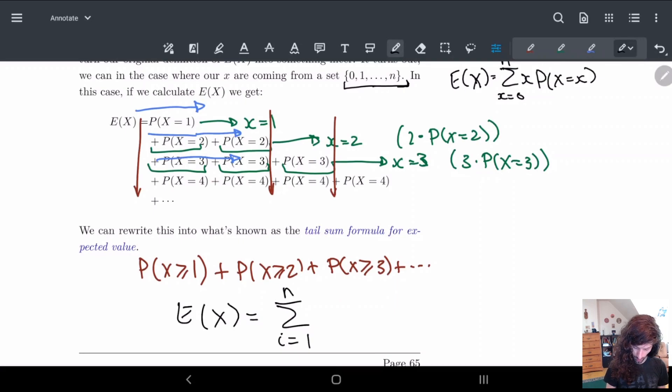Because we started off with 1, and here we have P(X ≥ i). This is basically what's called the tail sum formula. Let me highlight this: the tail sum formula for expected value.